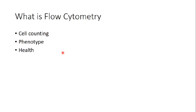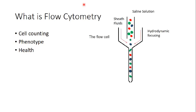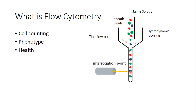Flow cytometry is a cell counting mechanism used to count cells, analyze the phenotype, and the health situation of the cell. In the flow cytometer, I have something called the flow cell. In the flow cell we add our cell mixture, then I have the sheath fluids. The sheath fluids apply something called hydrodynamic focusing, which sends the cells one by one through the flow cytometer tube. It's very important to pass the cells one by one, because here I have a laser beam. This point where the cells pass through the laser beam is called the interrogation point.